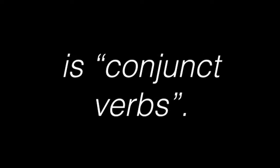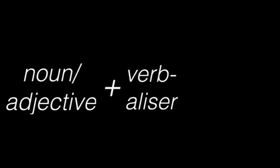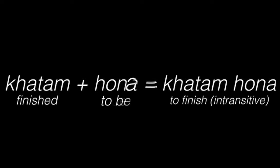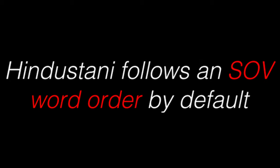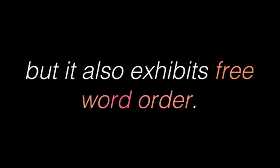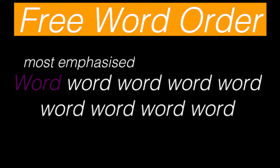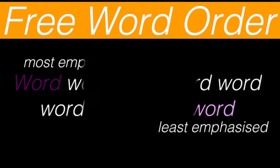Hindustani also uses a lot of compound verbs. For example, ana means to come, and combining it with jana meaning to go, you get a jana meaning to have come. Parna meaning to read can be combined with dena meaning to give to get par dena meaning to read out. Karna meaning to do can be combined with lena meaning to take to give kar lena meaning to have finished doing. Another cool feature of Hindi-Urdu grammar is conjunct verbs, where a noun or adjective is paired with a verbalizer, turning the phrase into a verb. Hindustani is an SOV language but it generally has free word order, where the first word is most emphasized and the last is least emphasized.